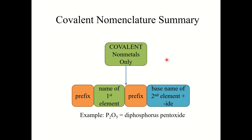Quickly summarizing covalent nomenclature: covalent compounds are compounds that are nonmetals only. You start with the prefix then the name of the first element — unless it has a subscript of 1, then you don't need the prefix — followed by the Greek prefix and the base name of the second element with the ending changed to -ide. So P2O5: di + phosphorus = diphosphorus; O5 gives penta + oxygen → pentoxide. Full name: diphosphorus pentoxide.